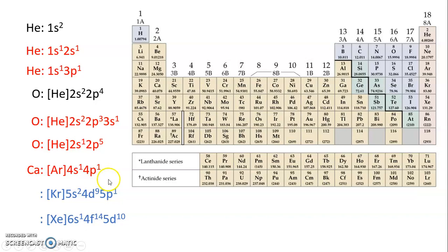Moving on to the next one, we can see that in this case we have krypton, which is here, and then we've added, it looks like 12 electrons past krypton, which would take us to cadmium. 36 plus 12 is 48.